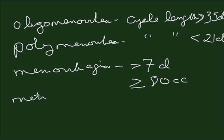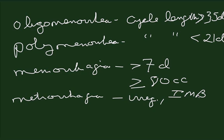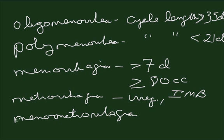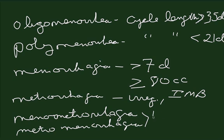Then metrorrhagia, which means irregular bleeding or intermenstrual bleeding — meaning bleeding between periods — and then menometrorrhagia, which are terms for heavy or prolonged irregular bleeding. So that's the old terminology.